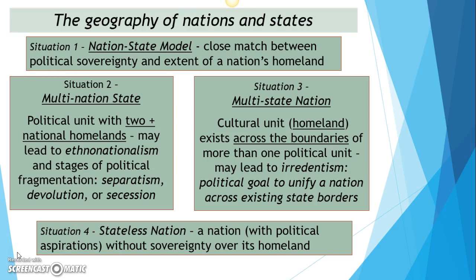Situation three — the multi-state nation — classic examples are the Kurds and Russians. During the USSR period, the government encouraged ethnic Russians to move into various areas of Eastern Europe to Russianize the culture. If you're familiar with what's been going on in Ukraine, irredentism has been Vladimir Putin's stated excuse for interfering in Ukrainian affairs — that he's protecting ethnic Russians. The classic historical example is Hitler, whose argument for invading Eastern Europe was that he was protecting ethnic Germans.